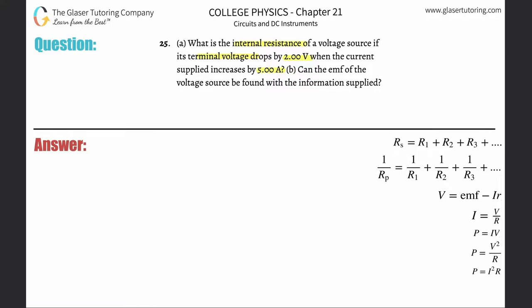Alright, so obviously if the current increases by 5, that means more current is flowing through the battery and therefore whatever resistance that the current has to overcome should then drop the amount of voltage that the battery is able to supply.